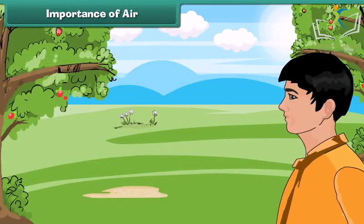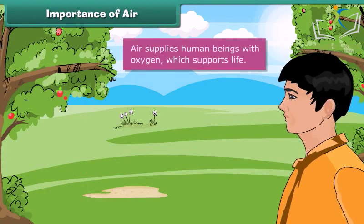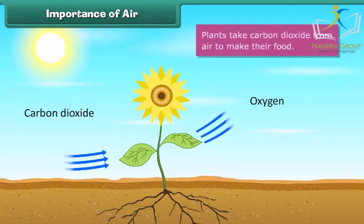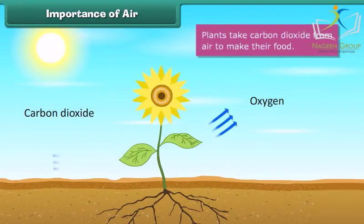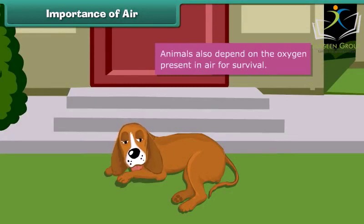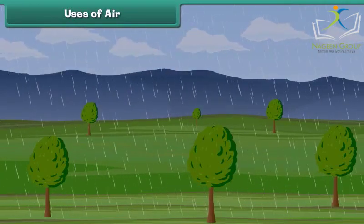Air supplies human beings with oxygen, which supports life. Plants take carbon dioxide from air to make their food. Animals also depend on the oxygen present in the air for survival.